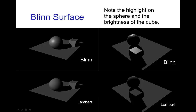Here the highlight has moved to the top of the sphere. With Lambert, the top of the cube has the same brightness regardless of camera position. With Blinn, when I move the camera, I'm getting a strong specular reflection off the top of the cube in this view on the right. So the top of the cube is much brighter from this camera position than from the camera position on the left.